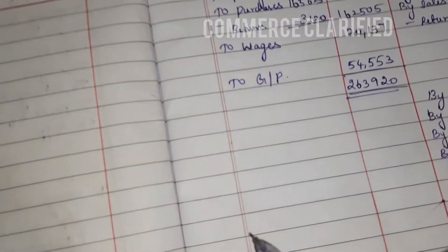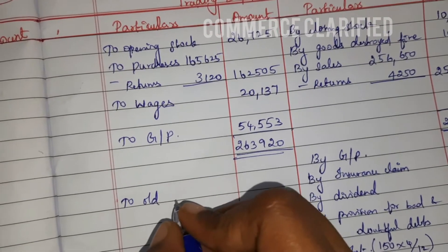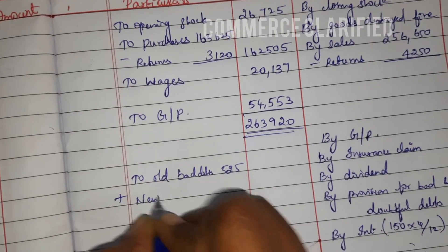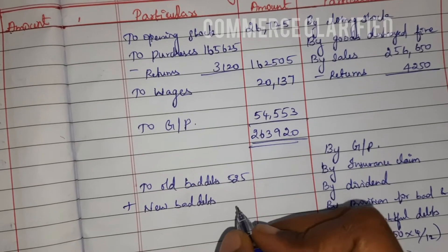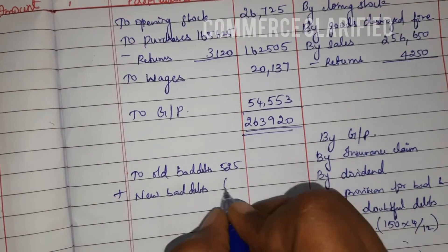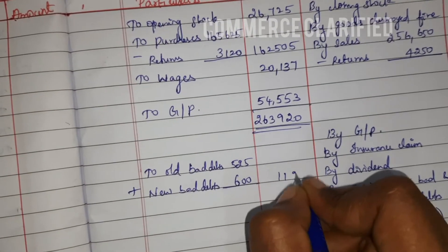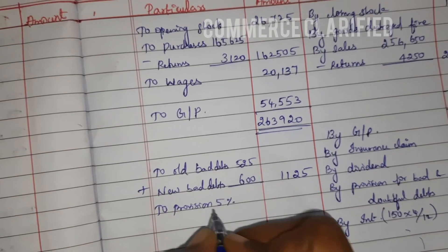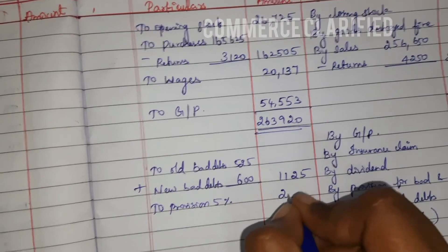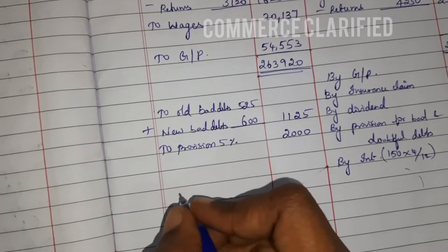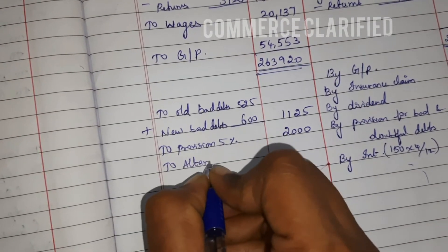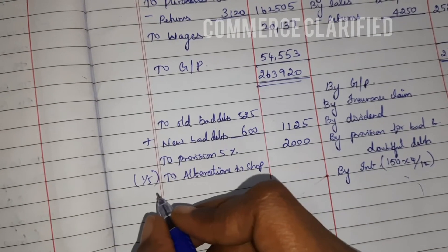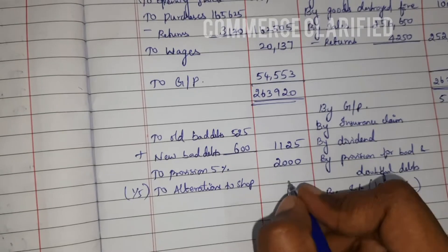On the debit side, first add new bad debts: old bad debts of 525 plus new bad debts of 600 equals a total outer column of 1,125. Next, provision for bad debts — when we reach the balance sheet I will explain — provision is 2,000. Next, alterations to shop from the trial balance is 4,500; one-fifth written off is 900 rupees.